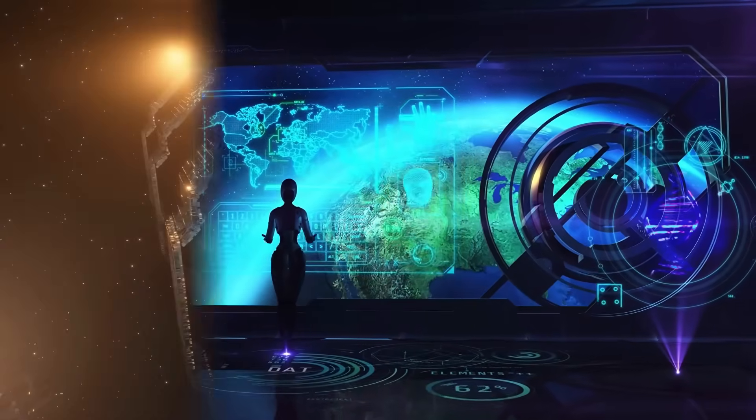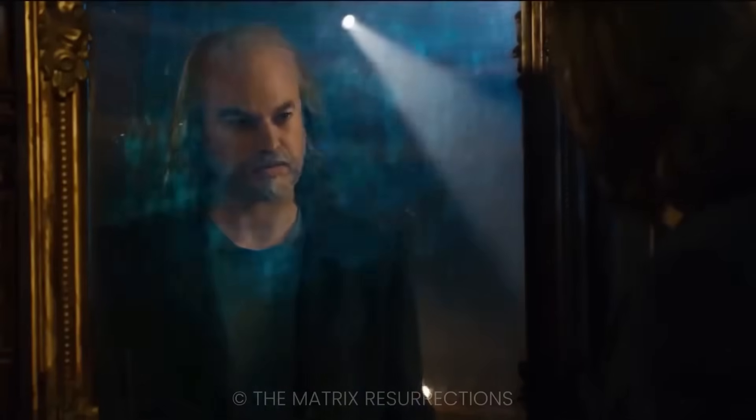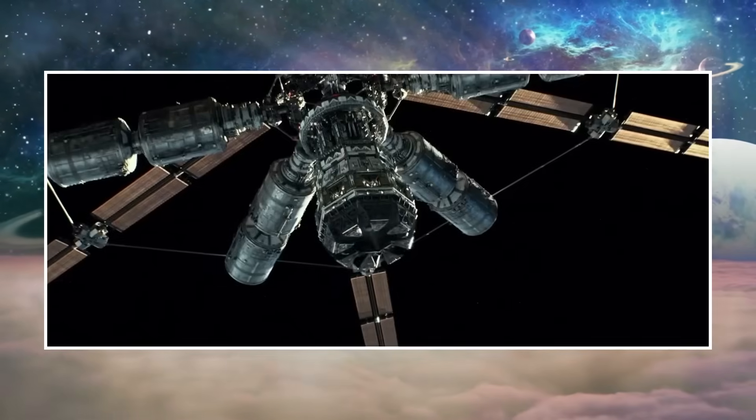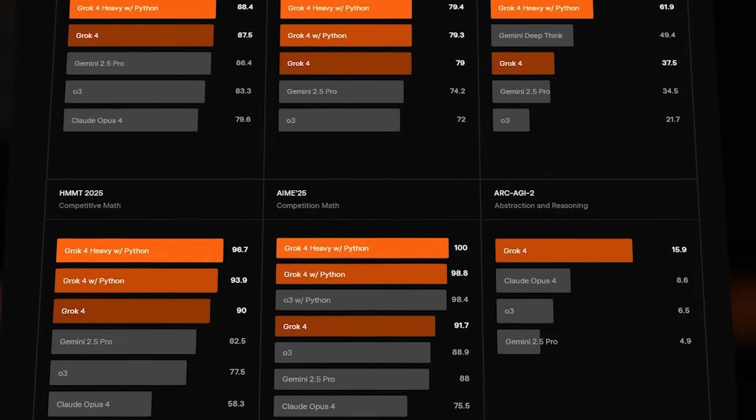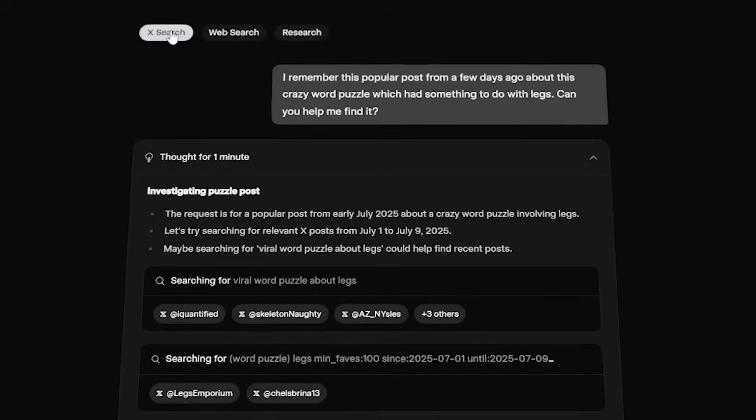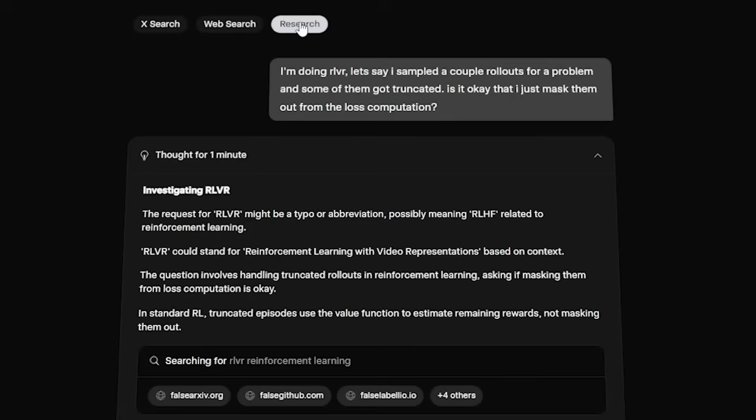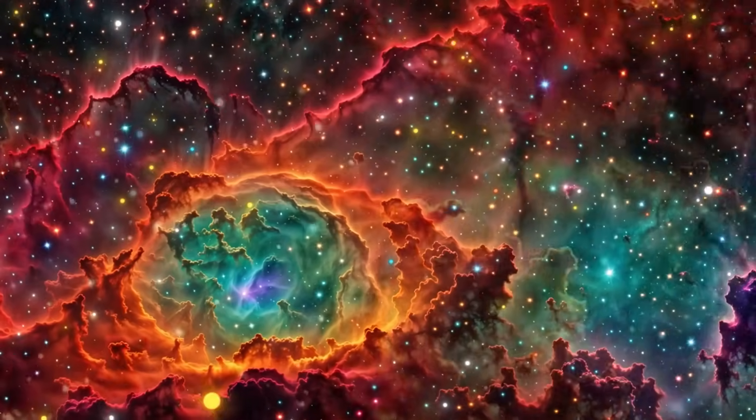The question that started all this dates back to the 1950s when physicist Enrico Fermi asked a simple question during lunch at Los Alamos. Where is everybody? This became known as the Fermi Paradox. The striking contradiction between the high probability of alien civilizations and our complete lack of evidence for them.